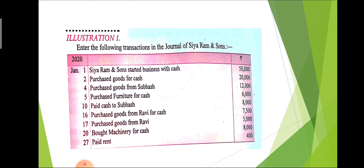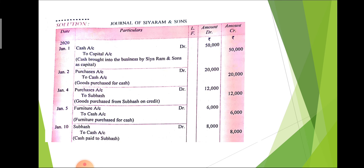There are three terms to remember: if cash is given, mention cash; if a name is given, mention the name; if both cash and a name are given, we prefer cash. In this entry — purchase goods from Subhas — only the name is given. Purchase is always debited, so the overall journal entry is: purchase account debit to Subhas account.